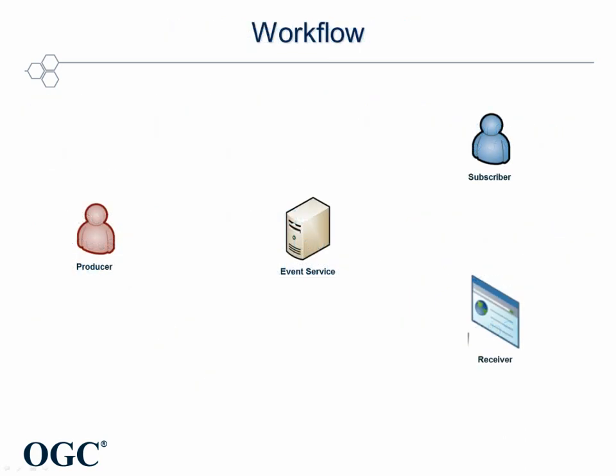First, the general workflow of the communication with the event service is explained. The involved components are the event service in the middle, a subscriber and a receiver on the right side, and a producer on the left side. As a first step, the subscriber sends a subscribe request to the service.